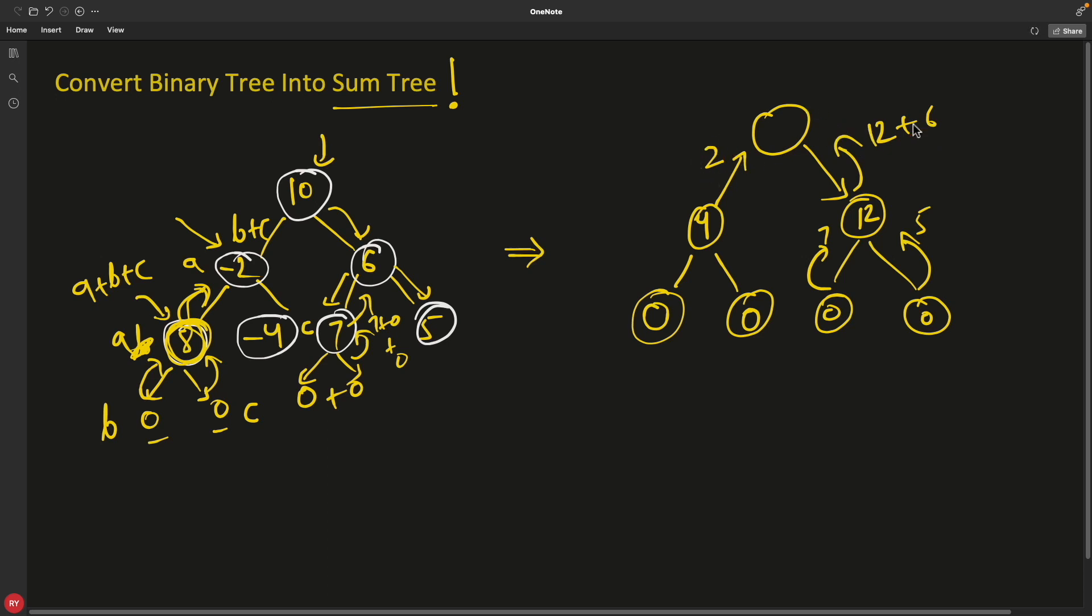So you will send 18 here. Now you have got 2 from left and 18 from right, which is 20. So this is your newly constructed sum tree from the given binary tree.